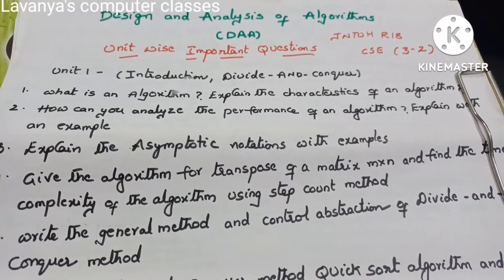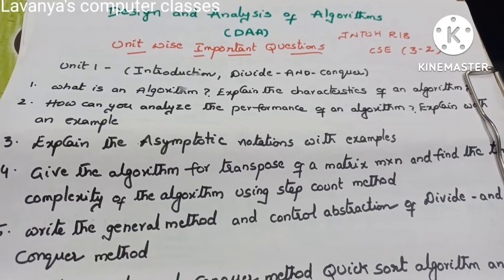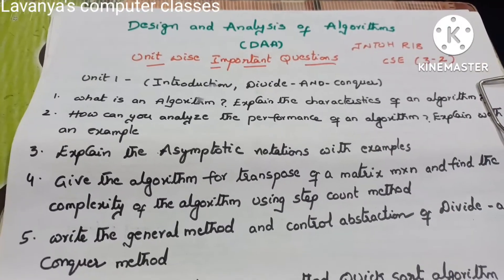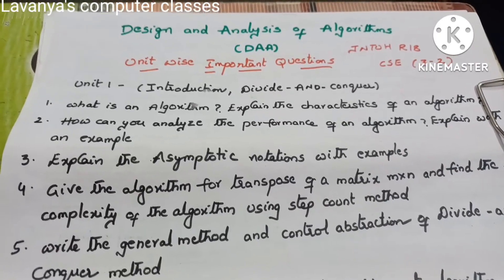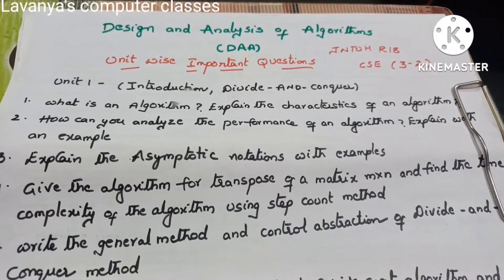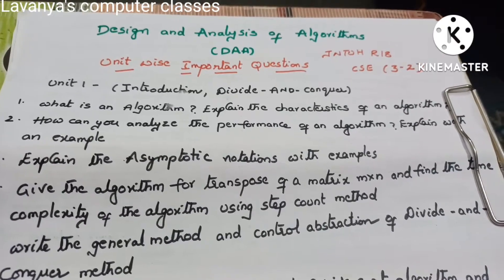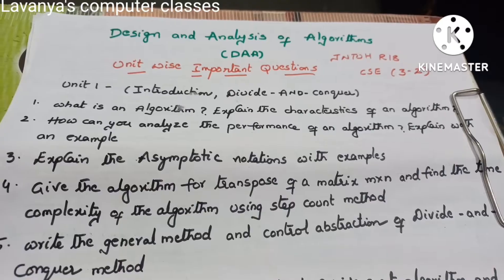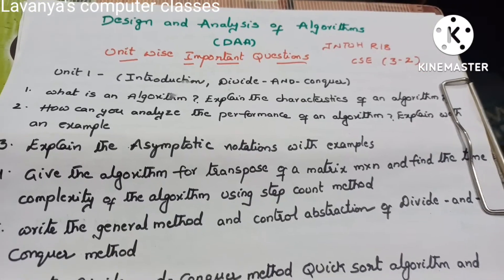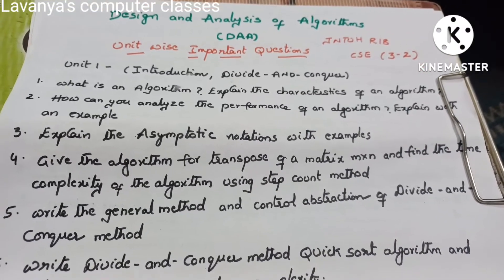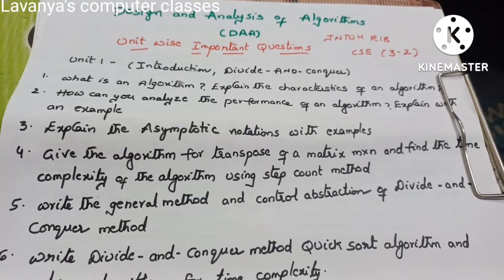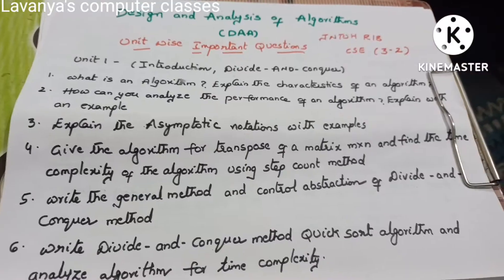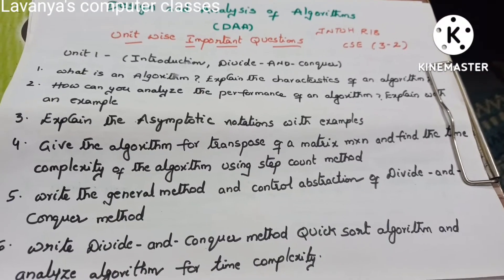First unit is Introduction and Divide and Conquer Method. The first chapter is only introduction. Question 1: What is an algorithm? Explain the characteristics of an algorithm. Question 2: How can you analyze the performance of an algorithm? Explain with an example — time complexity, space complexity. Question 3: Explain the asymptotic notations with examples. This is a very, very important question. These three are the introduction questions.